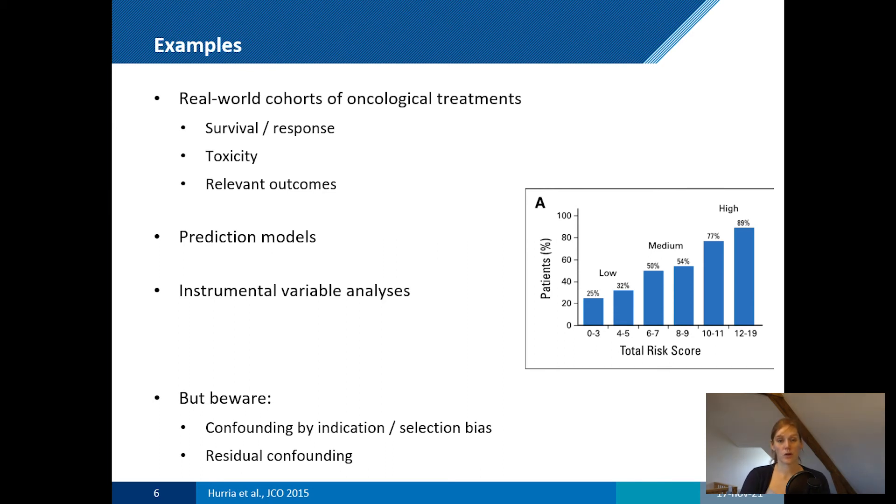However, there is a way to address this problem, and I would argue we can use this method much more often in older adults. This method is called instrumental variable analysis. An instrumental variable is a factor that determines treatment allocation but is not related to the outcome. For example, if a national guideline in one country states not to give a certain treatment, while a neighboring country's guideline recommends giving it, the country a patient is treated in could be considered pure coincidence. Comparing outcomes between the two countries can still tell us something about the treatment effect.